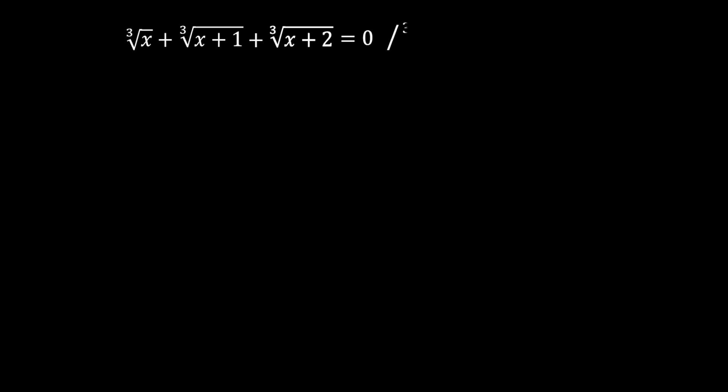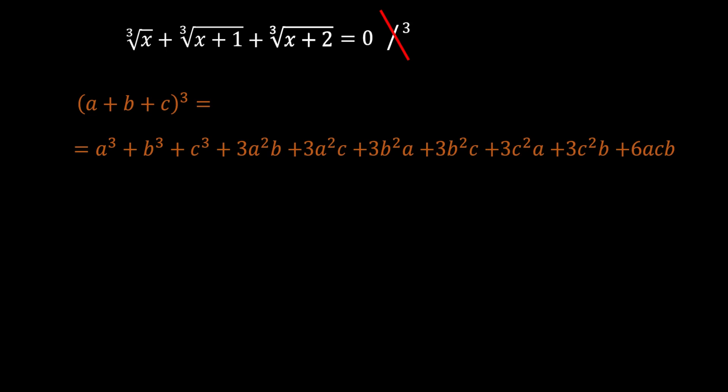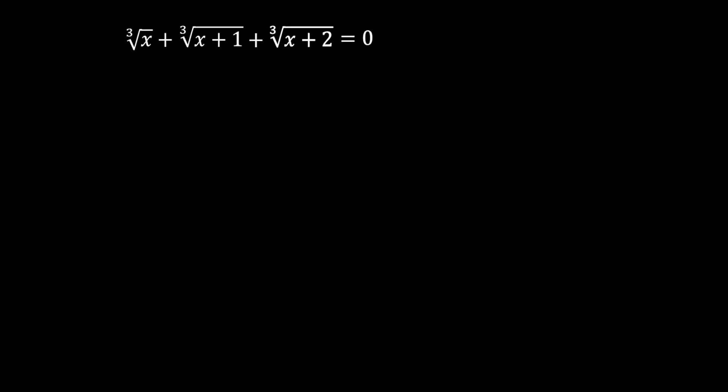The first thing that will come to mind for a lot of people is to raise everything to the cube, but this would actually be a really bad move. It is not incorrect, it is just really impractical. On our left side we have three individual terms, and all three terms would have to be raised to the power of three — that would be the cube of a trinomial. The formula for the cube of a trinomial looks something like this, and as you can see, this is pretty much horrifying.